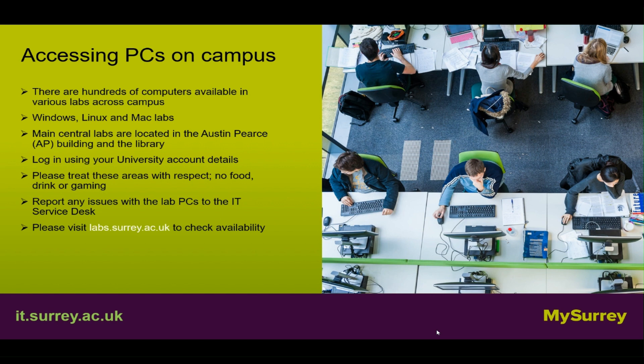Accessing PCs on campus: there are hundreds of computers available in various labs across campus including Windows, Linux and Mac labs. The main central labs are located in the Austin Pierce building and in the library. Log in using your university account details. Please treat these areas with respect — no food, drinks or gaming. Report any issues with the lab PCs to the IT service desk. Visit labs.surrey.ac.uk to check availability.